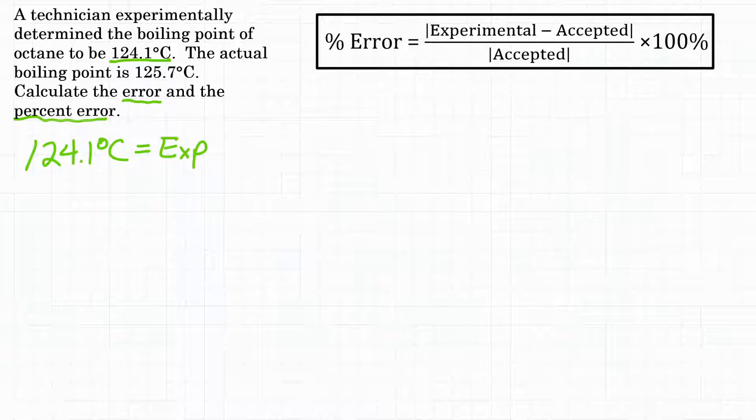And then we have the actual boiling point is 125.7 degrees Celsius. So 125.7 degrees Celsius is the actual boiling point, or I generally call it the accepted value. Could also be called the theoretical value or the true value. So those are the two bits of information we need to solve this problem.